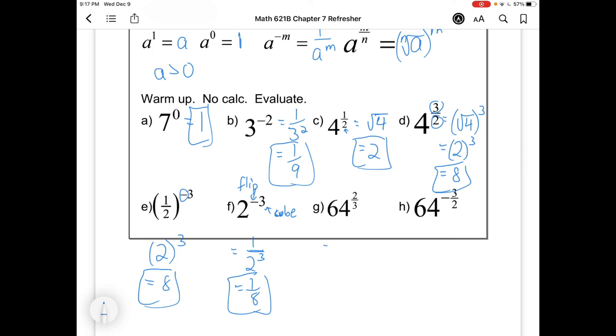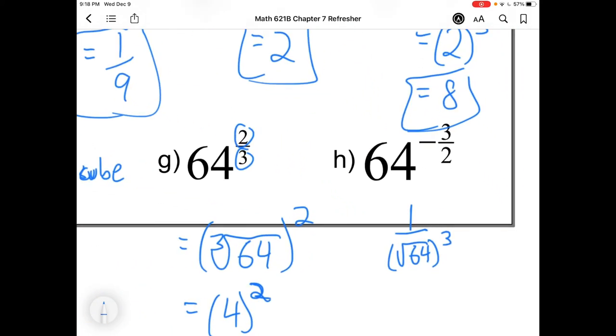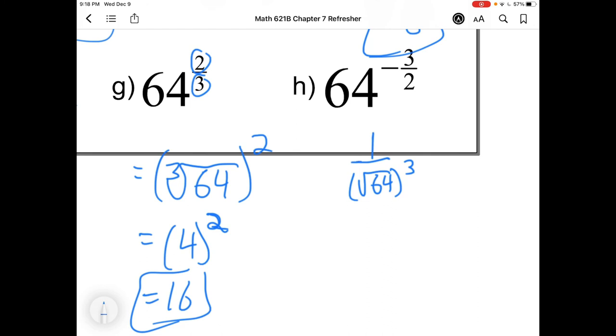The last couple have a little more going on. So this is telling us to take a cube root and then square it. The cube root of 64 is 4, squared is 16. And lastly, we've got this one: 64 to the negative three over two. So that's telling us you flip it, you square root this one, and you cube it. So square root of 64 is 8, and that needs to be cubed. And 8 cubed, at this point maybe you need to go to your calculator, but that's 512. So 1 over 512 in the end for 64 to the negative three over two.